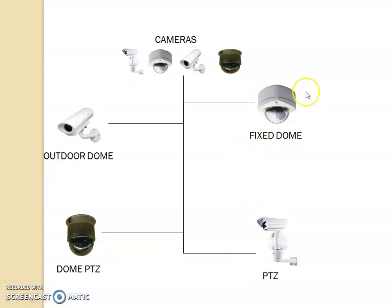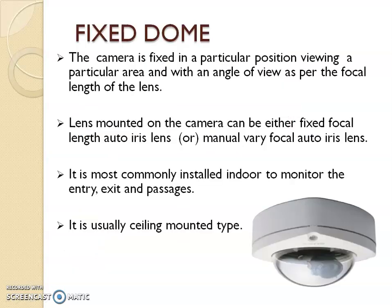Though it may sound confusing at this stage, once we go through each one of them we will be able to identify the right type of device for the right place. First, we will talk about the fixed dome. As the name states, a fixed dome has a fixed camera angle — the camera is fixed in a particular position viewing a particular area with an angle of view as per the focal length of the lens. It can be kept at the door entry, or as you may have seen, in an ATM, where the camera is constantly looking into one particular view only.